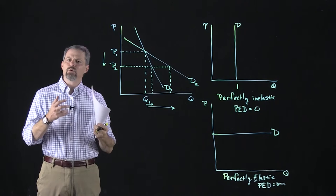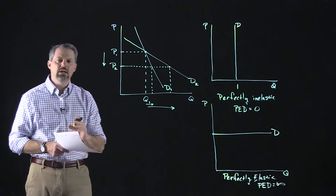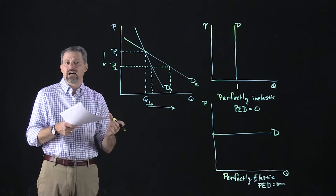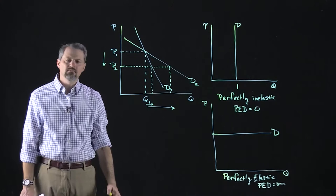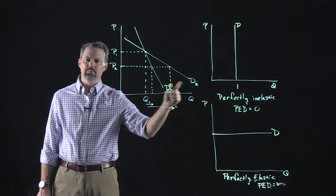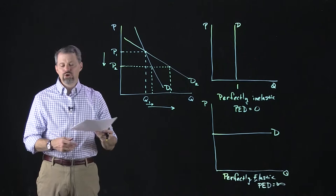Elasticity is a measure of the steepness of the demand curve. That means when we draw a demand curve — and this is also true for a supply curve — we need to think about how steep we make it, because the steepness tells us something about the elasticity. If we were going to draw the demand curve for gasoline, we know people don't respond very much to a change in the price of gasoline, so D1 would be a much better demand curve for gasoline than D2.